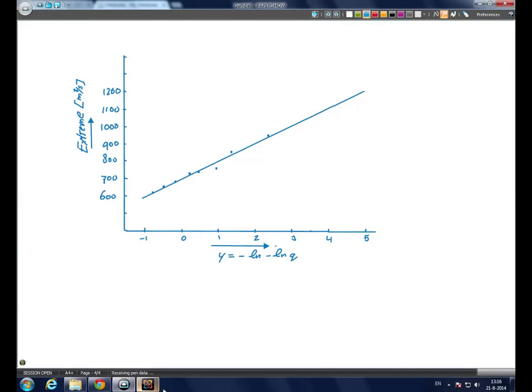Now for the extreme of T is 100, P is 1 over 100, Q is 0.99 and Y would be minus ln minus ln 0.99, which is 4.6.